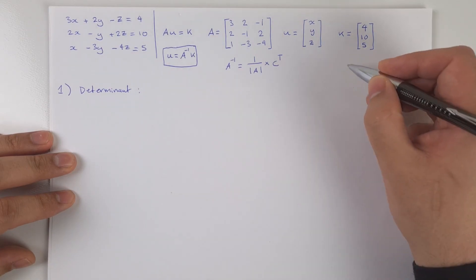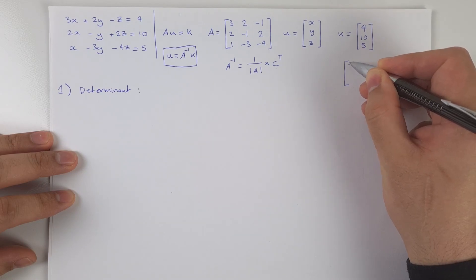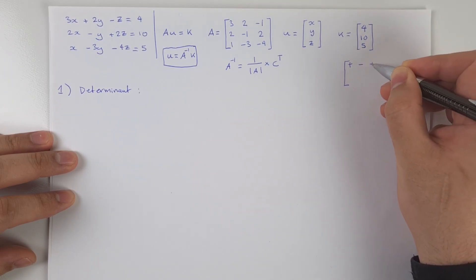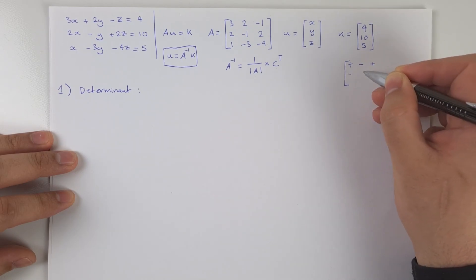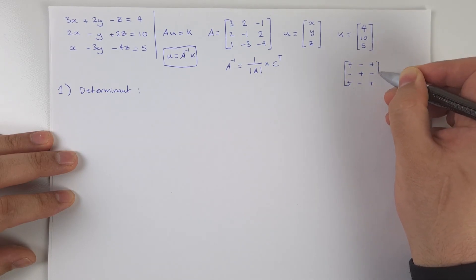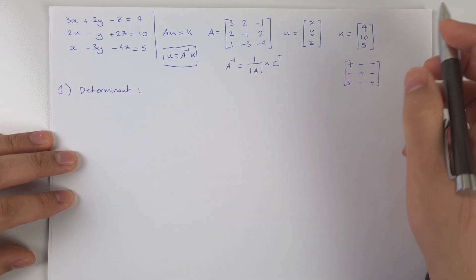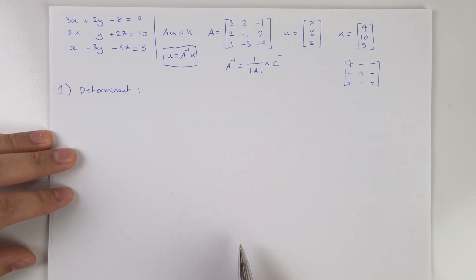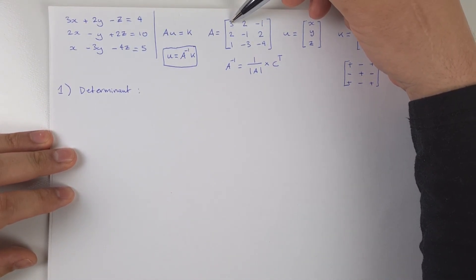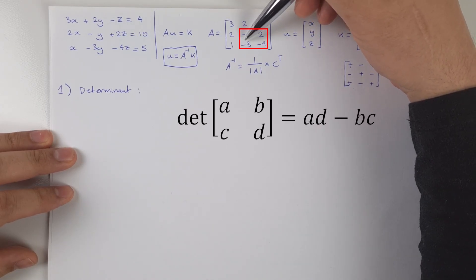To find the determinant, we need to keep one thing in mind. Because we're working with a three-by-three matrix, the sign values of the different elements alternate like this: plus, minus, plus — minus, plus, minus — plus, minus, plus. This is going to be very important for finding both the determinant and the cofactors. We start with the first element, cross out the row and column that intersect at that element, which leaves us with a two-by-two mini matrix, and then find the determinant of that.